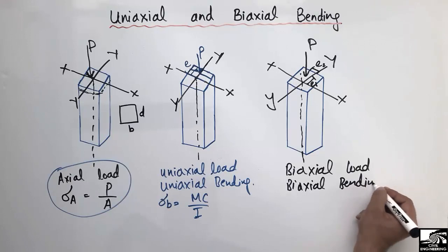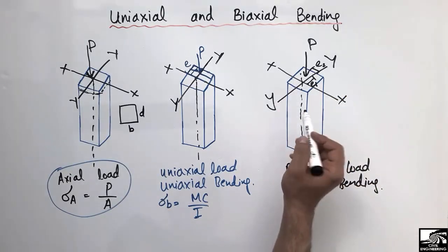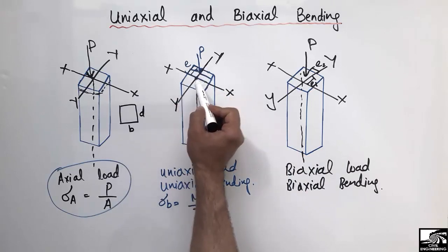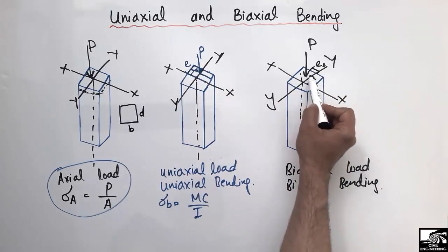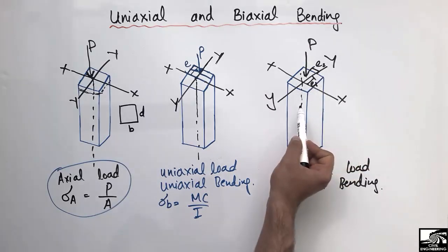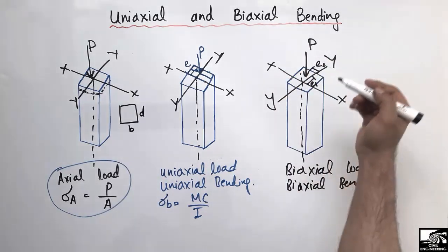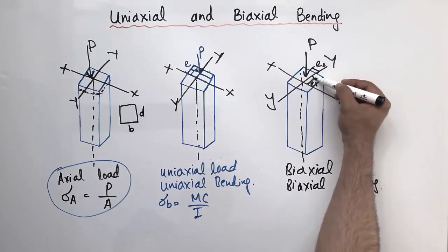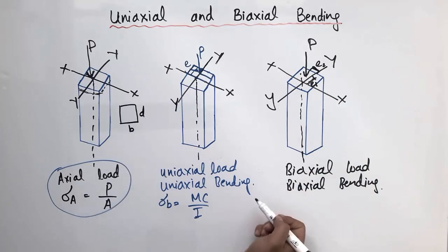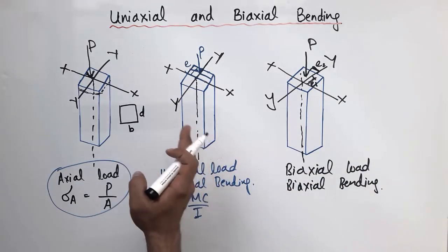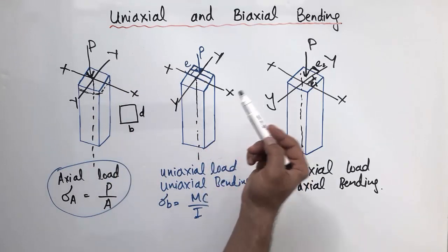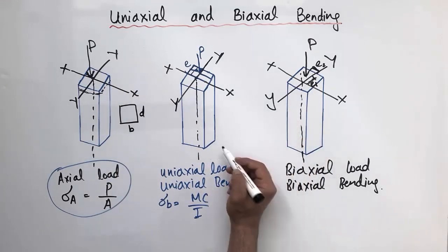The bending caused by a biaxial load is called biaxial bending, because the column will bend about both axes — not just one axis as in the uniaxial case. We will have two eccentricities: one along the y-axis and one along the x-axis. I hope you understand how to find the difference between uniaxial loading and biaxial loading, as well as uniaxial and biaxial bending.